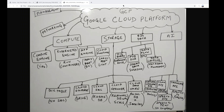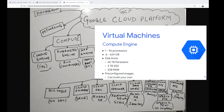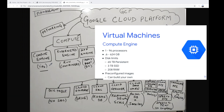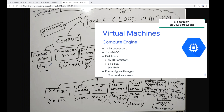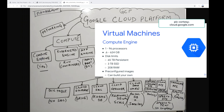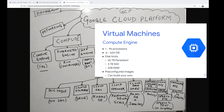The first important service is the compute service, where four important things are available: Compute Engine, Kubernetes Engine, App Engine, and Cloud Functions. Compute Engine is used to create VMs — for example, a Windows VM or Linux VM. If you want a VM with 8 GB RAM or some storage, you have to use Compute Engine services.